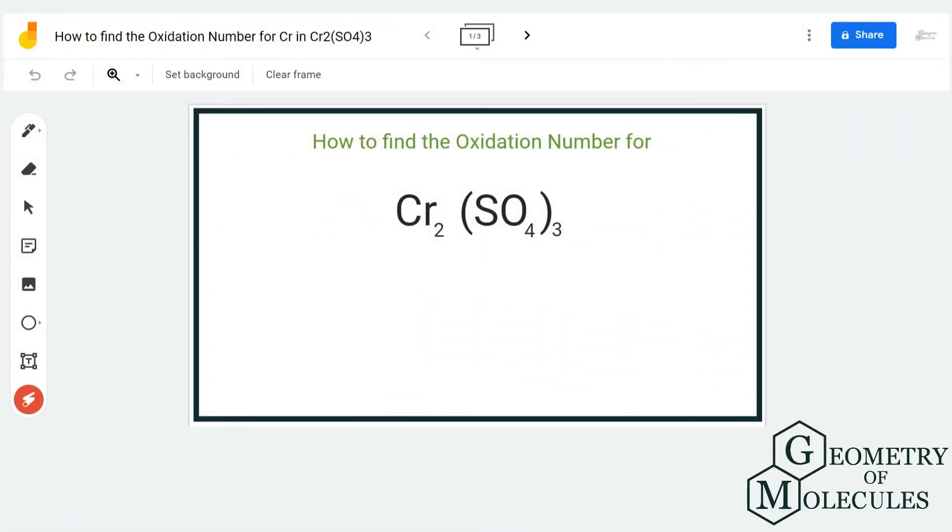Hi guys, today in this video we are going to find out the oxidation number for chromium in Cr₂(SO₄)₃. To find out the oxidation number, we are first going to check the total charges on the compound.